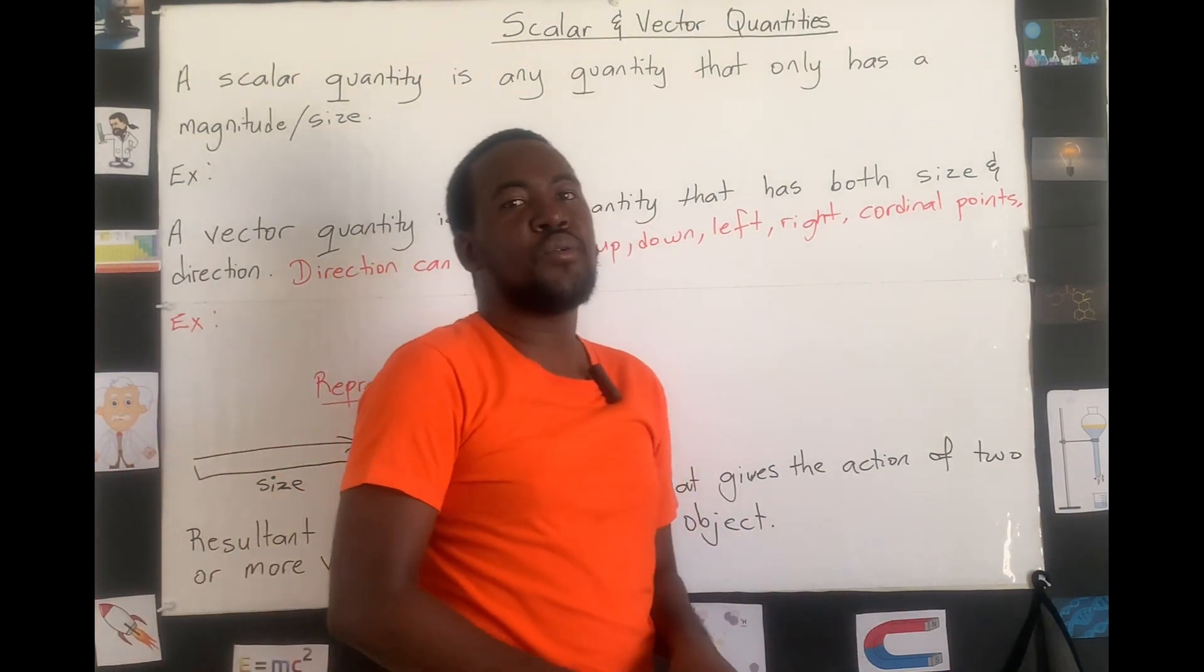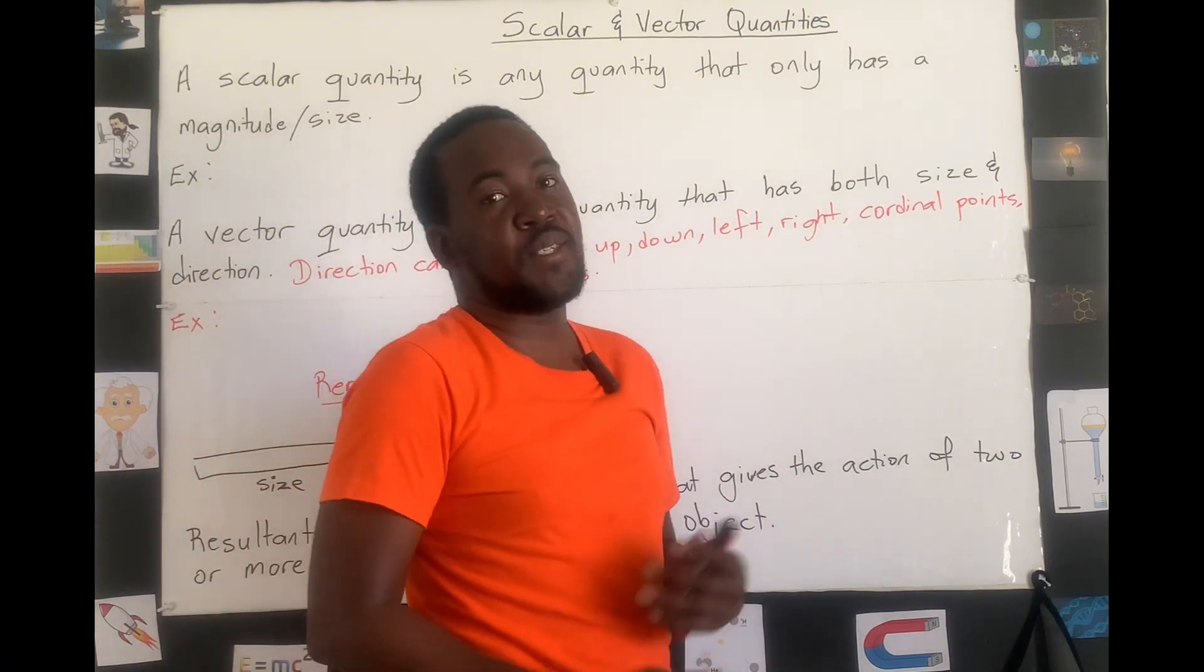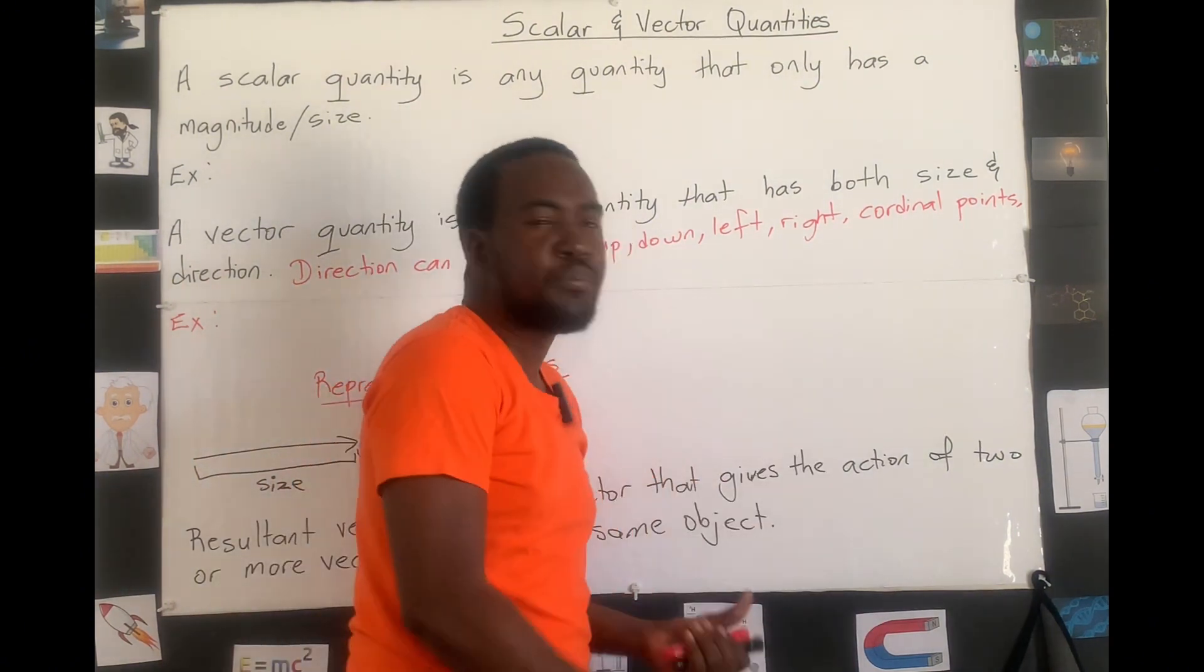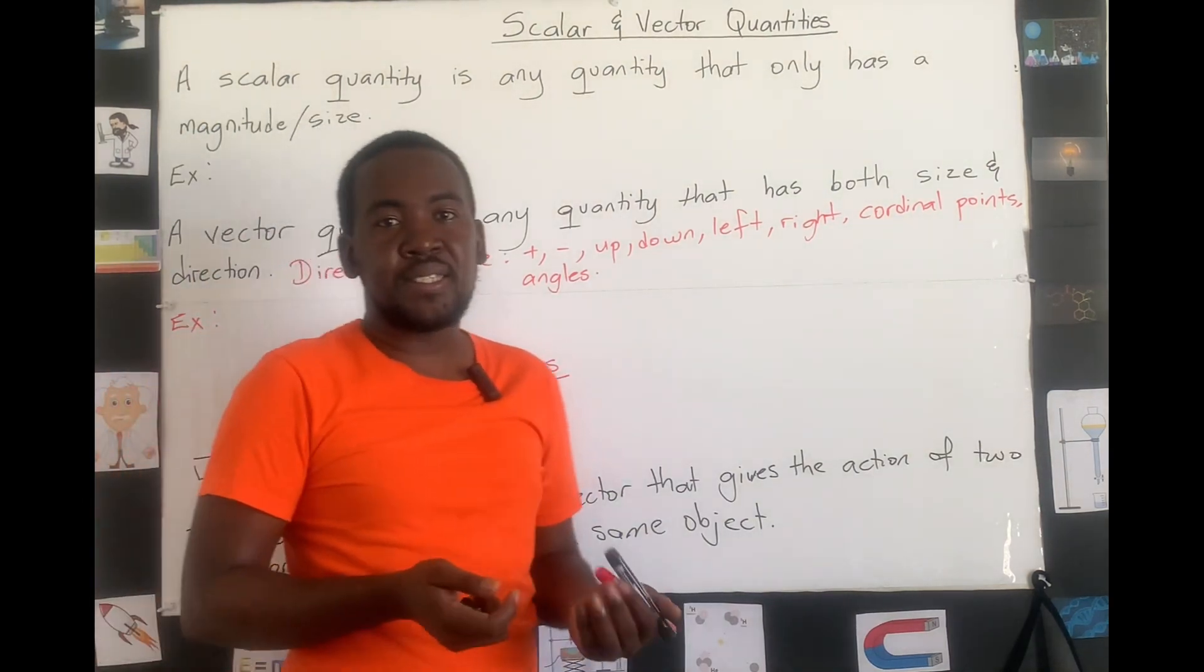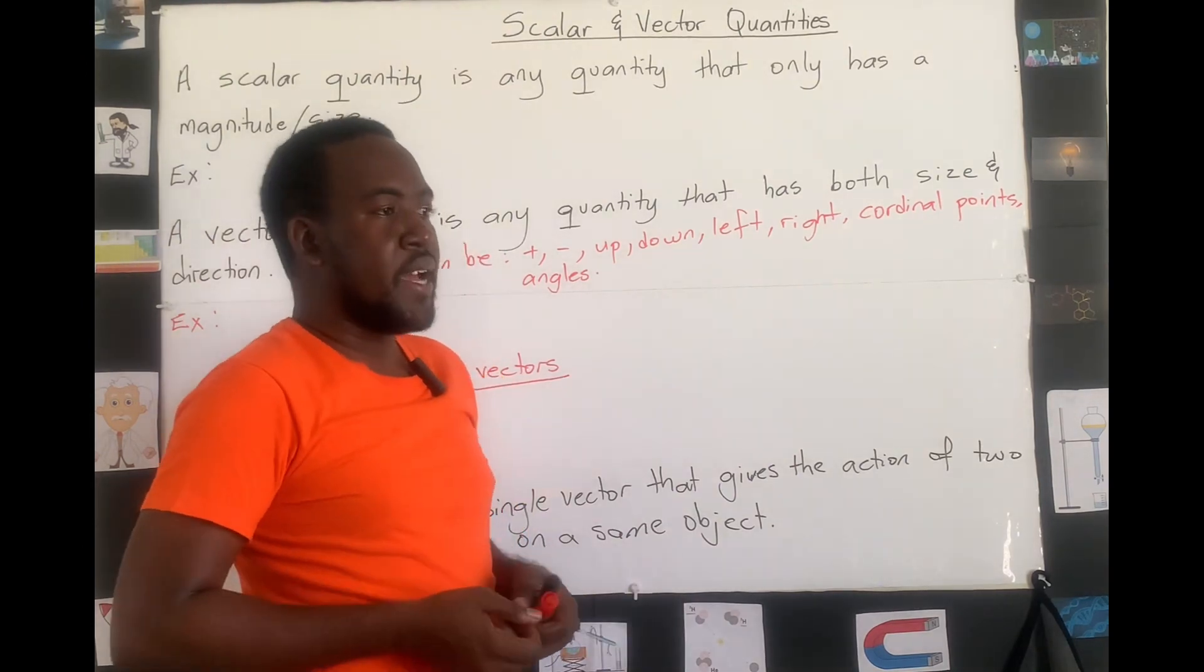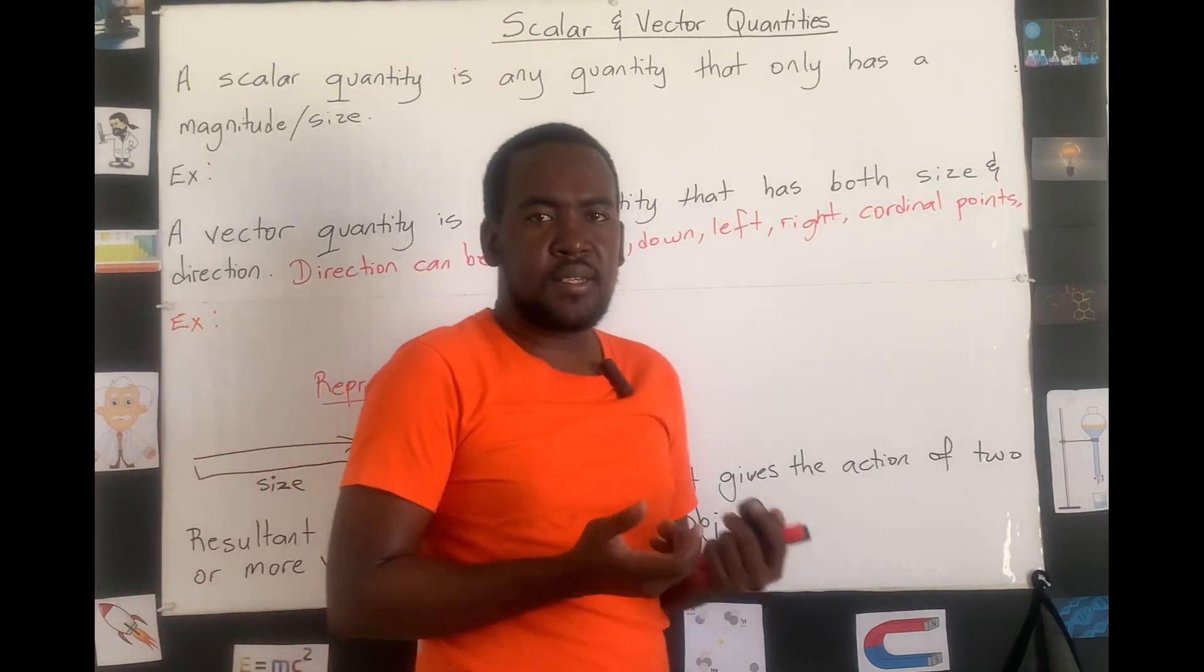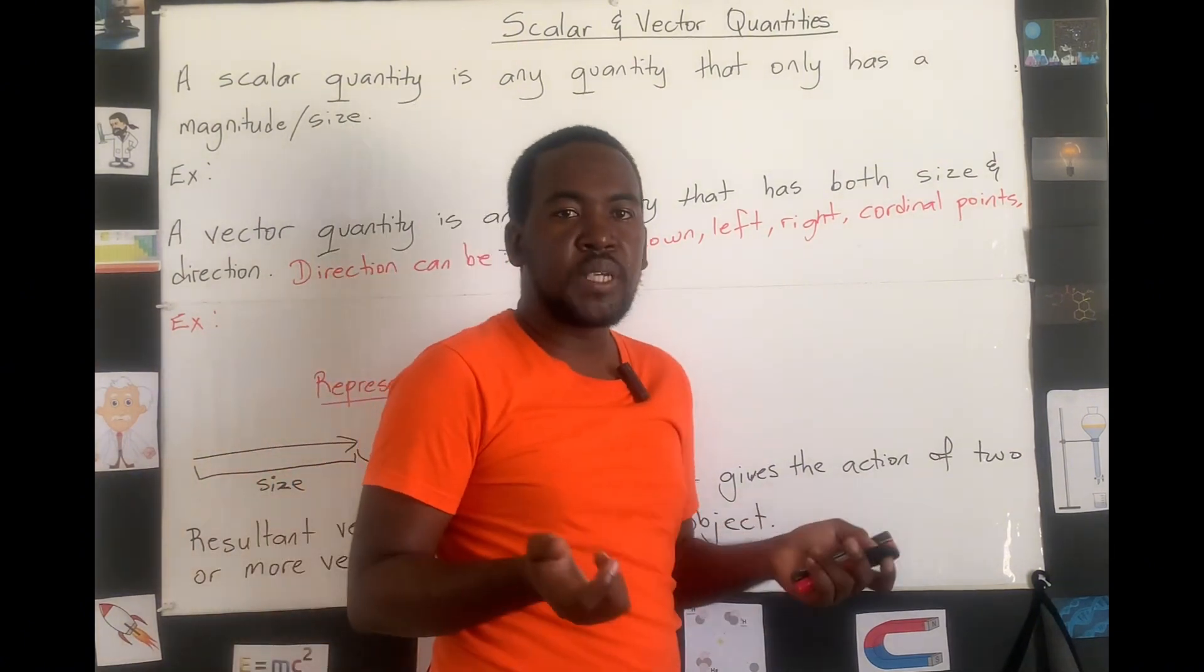We have been talking about quantities from the start. Quantities such as speed, time, temperature, current. Those are what we call quantities because those are the things that we measure and calculate to give us the size of a specific value or object.